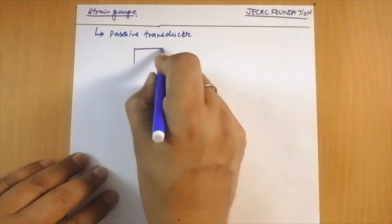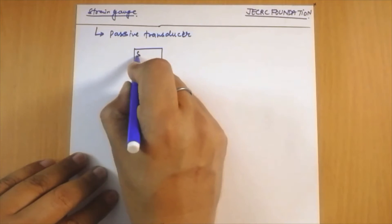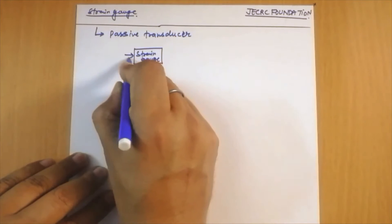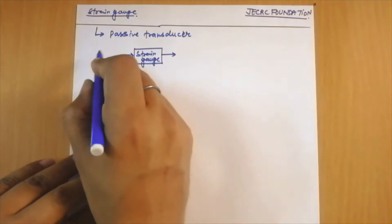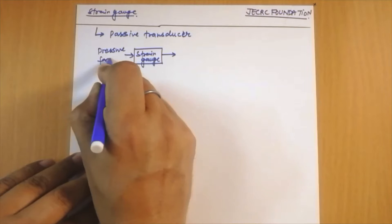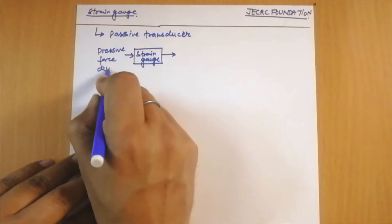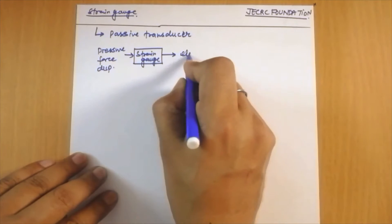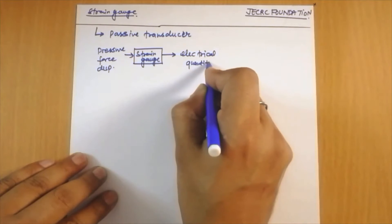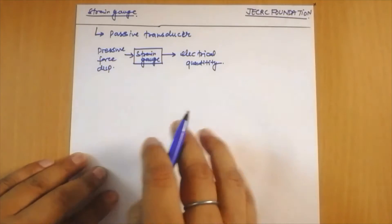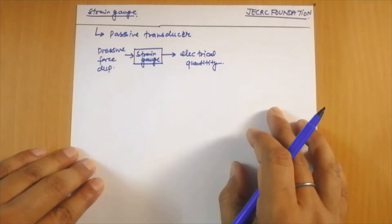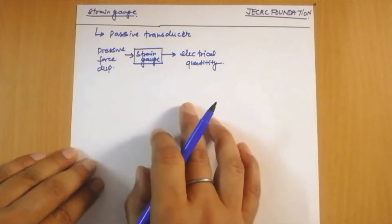A strain gauge converts a non-electrical quantity — which can be either pressure, force, or displacement — into an electrical quantity. So a strain gauge can convert either pressure, force, or displacement into an electrical quantity.